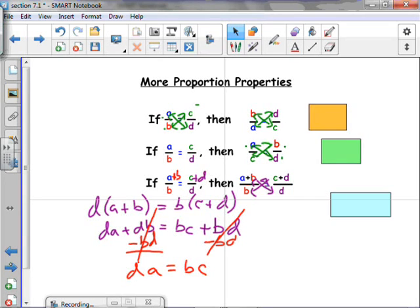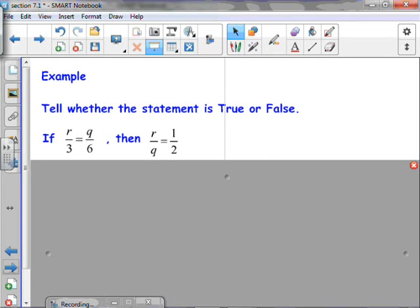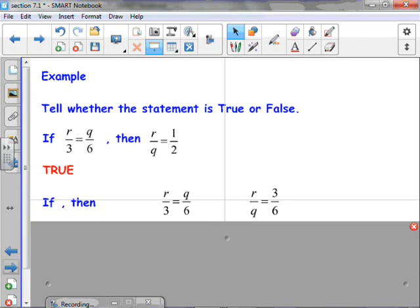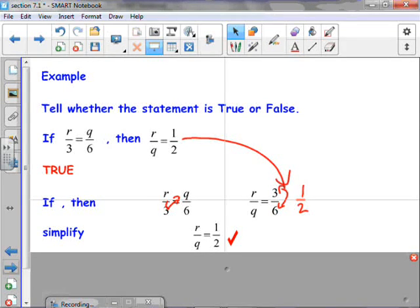I'm going to give you a couple of, well, let's do one together and then a couple of ways to practice this. Tell whether the statement is true or false. If R over 3 equals Q over 6, then R over Q equals 1 over 2. Well, let's go through it. This is true. Spoiler alert. So the first thing we're going to do is we're going to start here. R over 3 equals Q over 6. And what we're going to do is we're going to flip our middle terms. So now we have R over Q equals 3 over 6. From there, it's not too hard to see that 3 over 6 is just 1 half, which, what do you know, is exactly what we were trying to show. So we've got that it is true.